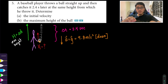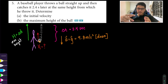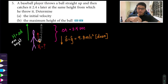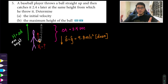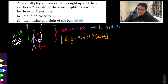If it takes 2.4 seconds to go up and come back down, we can take advantage of symmetry. Since the trajectory is a parabola, the time to reach the top is half the total time. So to reach the maximum height, it takes 1.2 seconds.